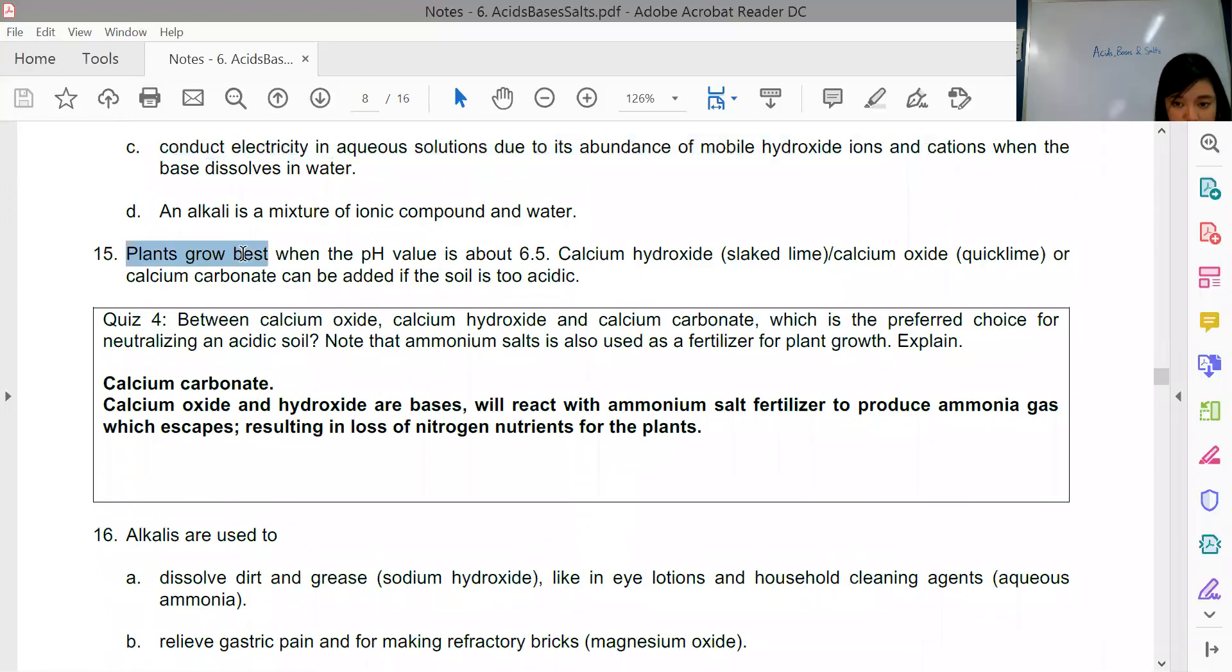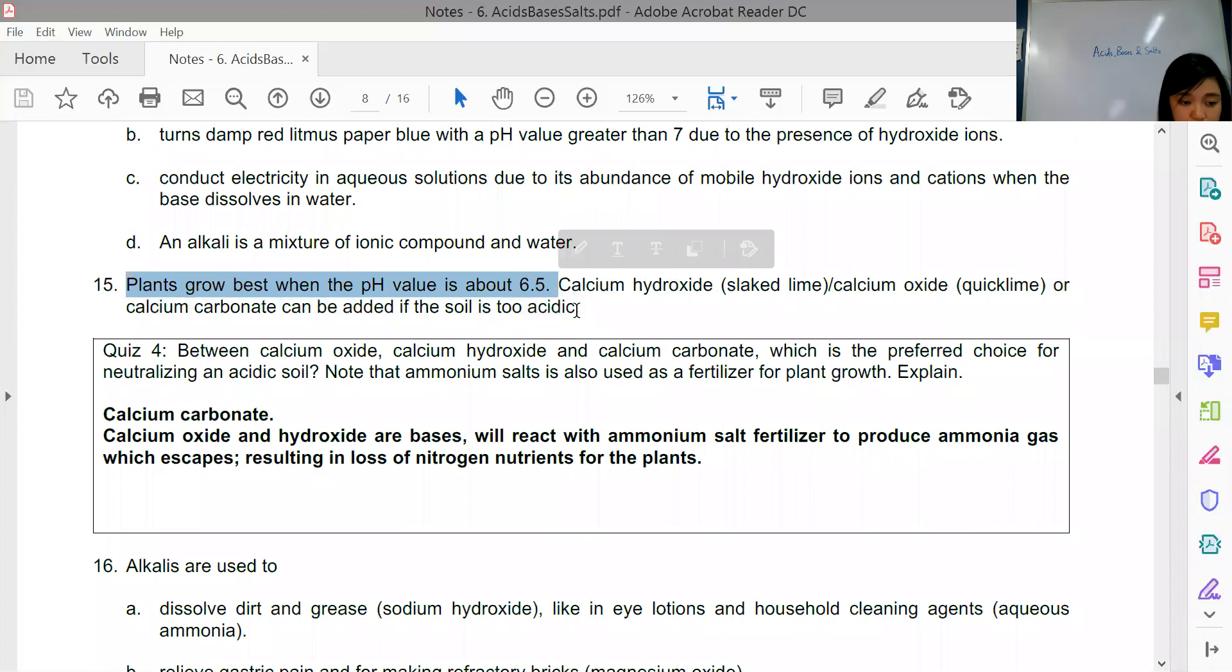Let's take note of this question here. Plants grow best at a pH value of about 6.5. If we have to choose between calcium hydroxide, calcium oxide or calcium carbonate, which should be added if the soil is too acidic? The answer should be calcium carbonate because calcium oxide and hydroxide are bases.